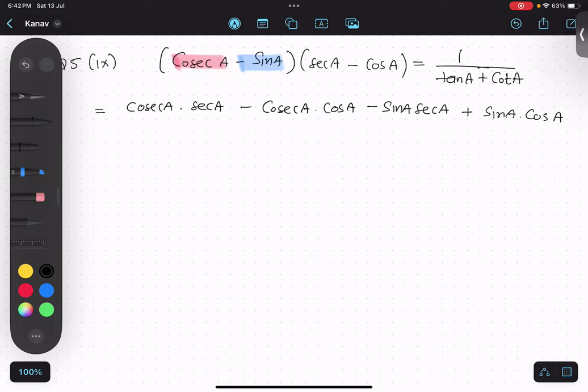Now we will change into sin and cos. Cos A will become one upon sin A multiply by one upon cos A, one upon sin A multiply by cos A.